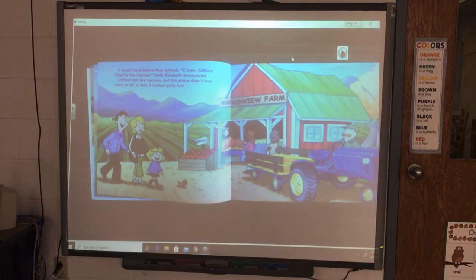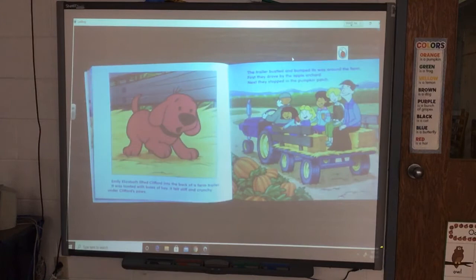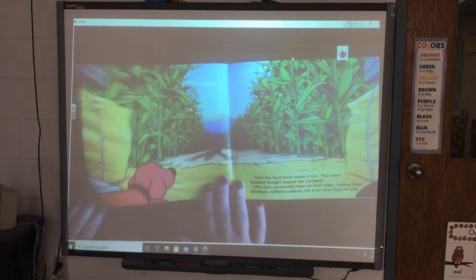Clifford felt very nervous, but this place didn't look scary at all. In fact, it looked quite fun. Emily Elizabeth lifted Clifford into the back of a farm trailer. It was loaded with bales of hay. It felt stiff and crunchy under Clifford's paws. The trailer bustled and bumped its way around the farm. First, they drove by the apple orchard. Next, they stopped in the pumpkin patch.